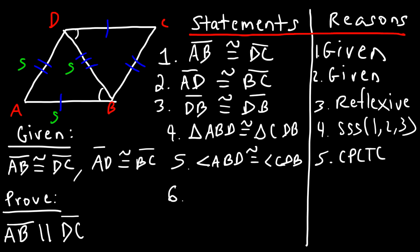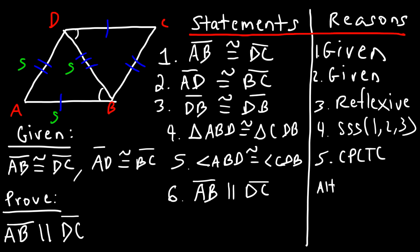Now we can make our final statement: AB is parallel to DC. Because angles ABD and CDB are congruent and they are alternate interior angles, the converse of the alternate interior angle theorem tells us the lines are parallel. That's one way to prove two lines are parallel in a typical two-column proof. Thanks for watching.